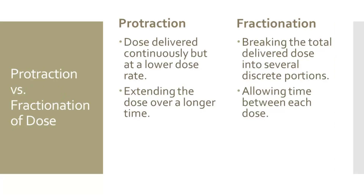Next, I want to discuss how delivering the radiation dose can affect biological harm. Doses of radiation delivered over a longer period of time allow for cell repair and result in less biological harm. There are two ways to accomplish this. The first is protraction — a dose of radiation given over a few minutes will be far more harmful than the same dose extended over hours. Fractionation, on the other hand, is separating the exposures into portions with time in between each exposure, which also allows cells to repair and results in less biological harm.